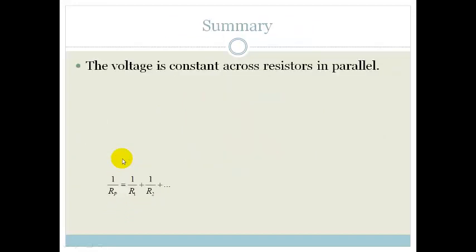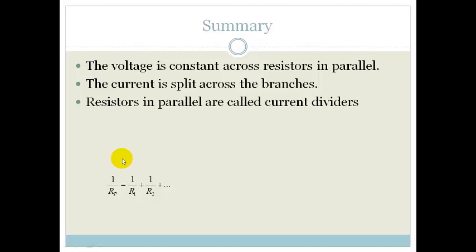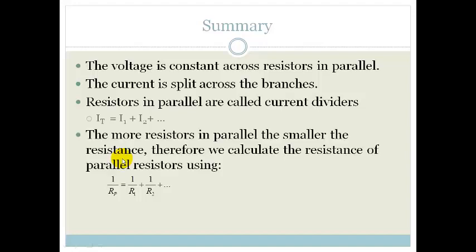Right, so let's summarize that. The voltage is constant across the resistors in parallel. The current is split across the branches. The resistors in parallel are current dividers, as we mentioned. So therefore, current can be measured as I1 plus I2 plus I3, etc.